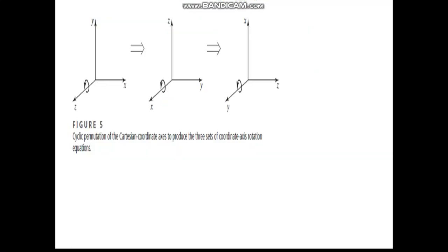I was talking about cyclic permutation of the Cartesian coordinate axes to produce the three sets of coordinate axis rotation. As you can see here, x is replaced by y, y is replaced by z, and z is replaced by x for rotation around x-axis. When making rotation about y-axis, again we cyclically change: y is replaced by z, x is replaced by y, and z is replaced by x.